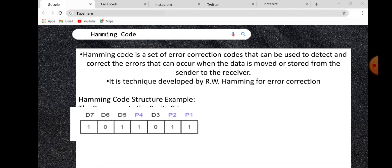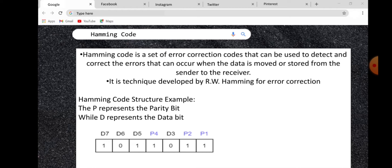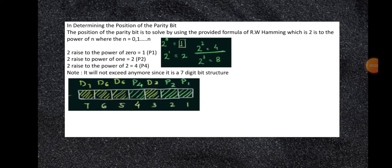The Hamming Code structure example is shown below. P represents the parity bit while D represents the data bit, and it has a 7-bit structure. In determining the position of the parity bit, the position is solved using the formula of R.W. Hamming, which is 2 to the power of n, where n is equal to 0, 1, and so forth. So 2^0 = 1, 2^1 = 2, 2^2 = 4. These represent the position of the parity bit. It will not exceed further since it is a 7-digit bit structure.